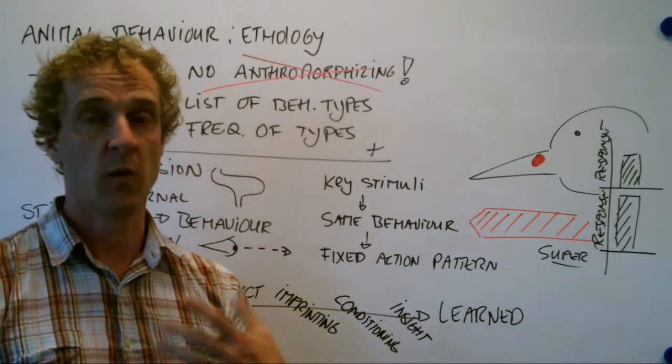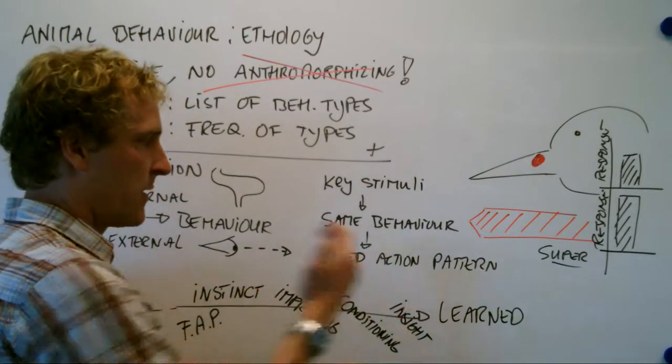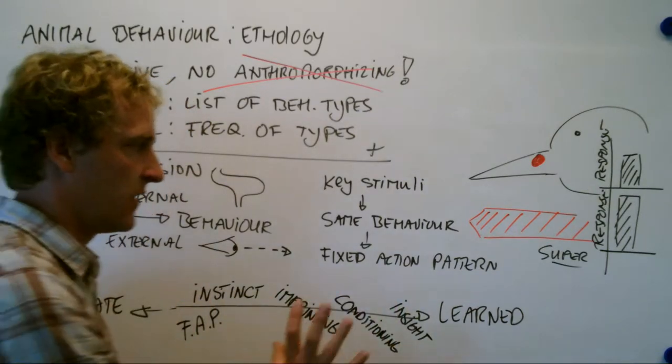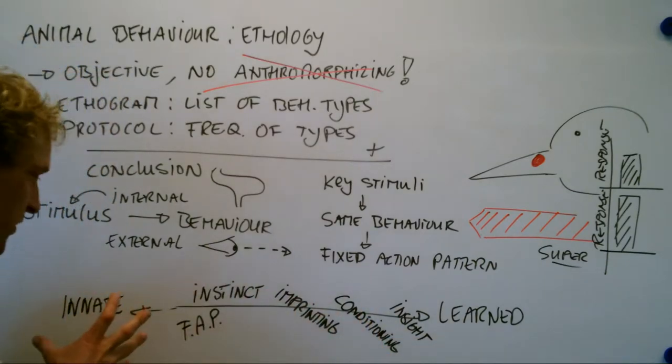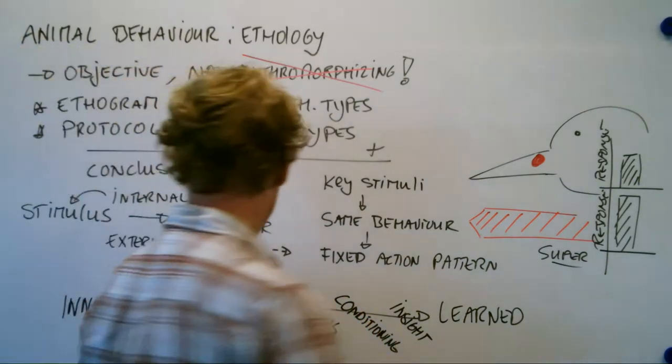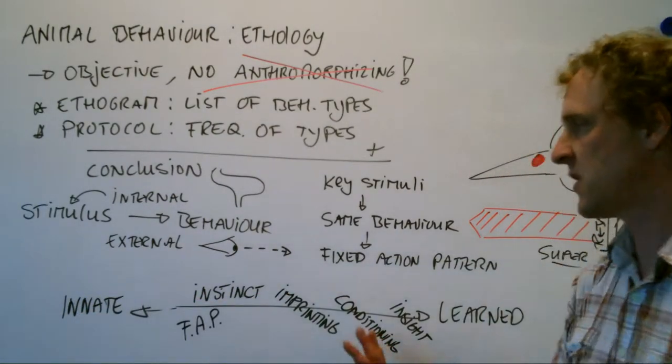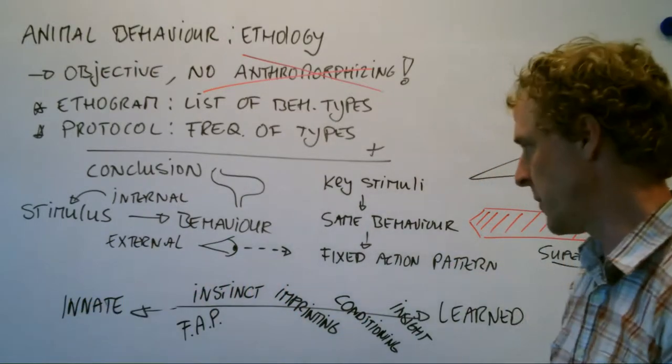On the other side of the spectrum is learned behavior. So actually what you're doing now, you're picking up new information that's learning. And that's the other side of the spectrum. You learn something new. It wasn't there yet. Now, and there are certain types of behavior that have a place in this range. Either to the right hand side, to the learned side of the spectrum. Or to the innate side of the spectrum. For instance, this fixed action pattern is quite innate. It's all the way to the left hand side for you. Instinct. It's an innate behavior type.